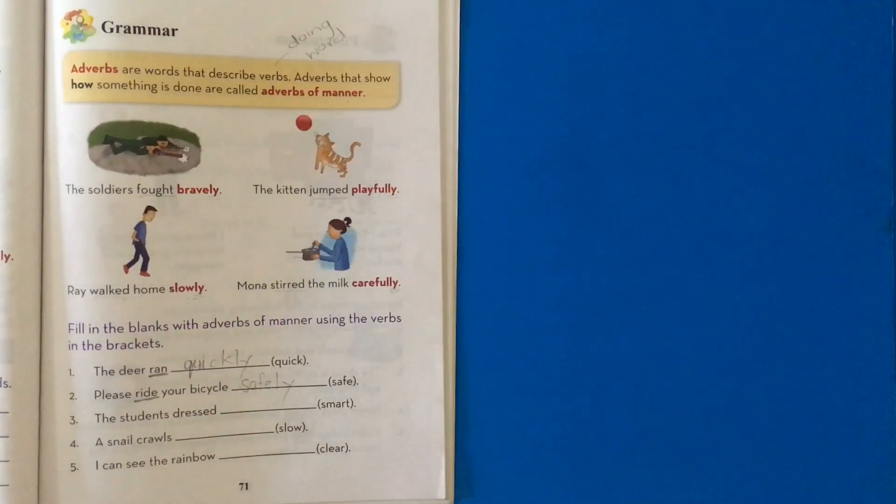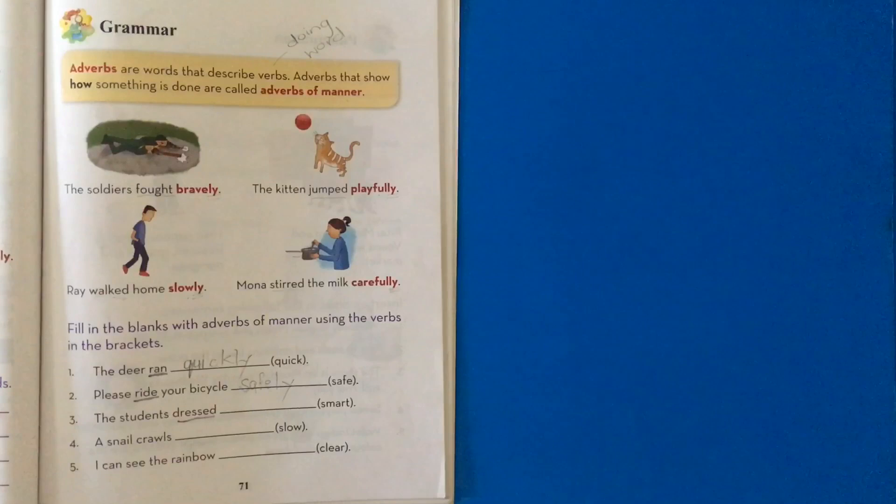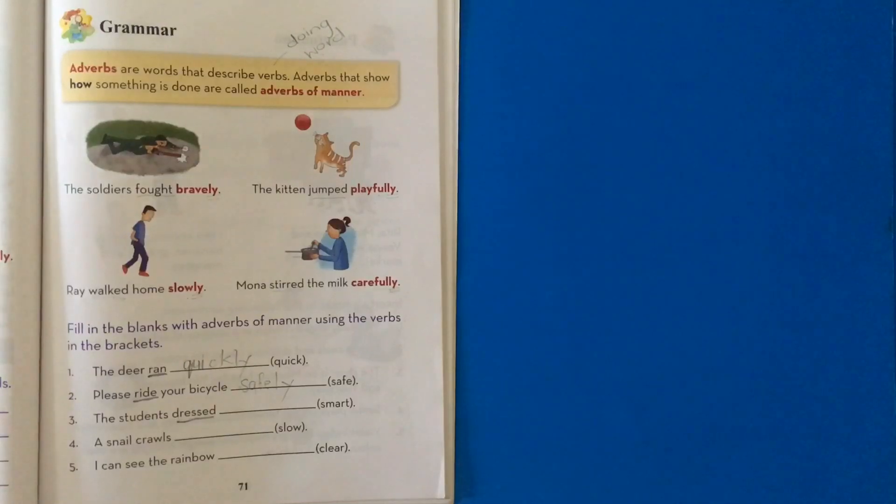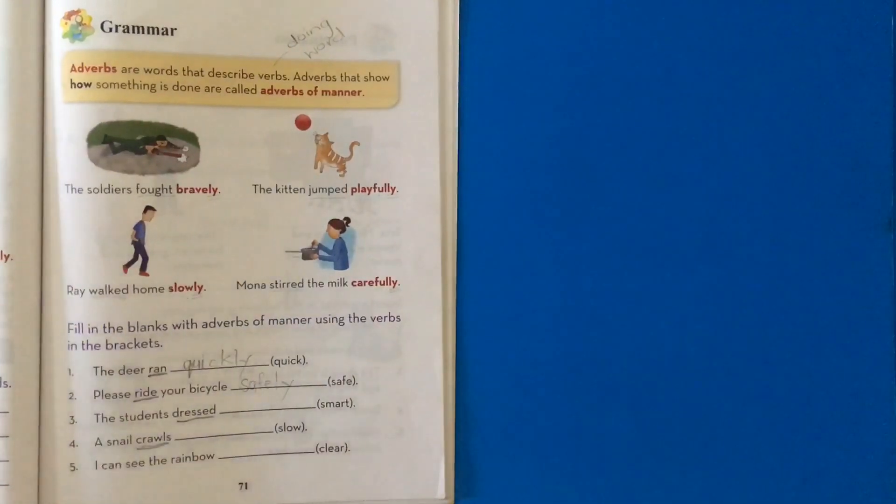The students dressed. What is our verb? Dressed. How did the students dress? The students dressed smartly. The snail crawls. How does the snail crawl? Crawls is our verb, right? The snail crawls slowly. What's our formula? Slow plus L-Y.